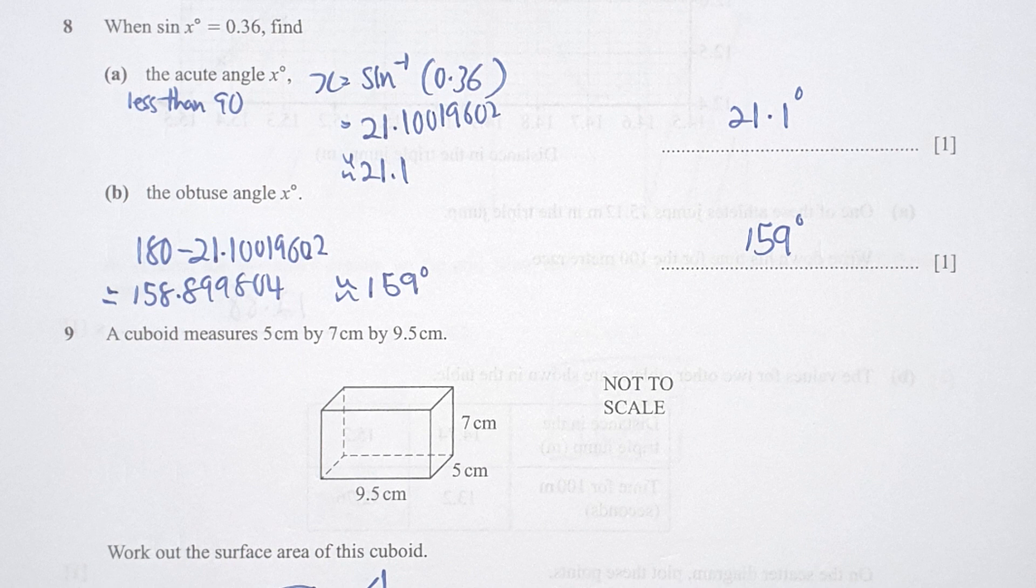For the obtuse angle, simply take 180 minus the 21.1 result that we got earlier. It should be 159 after correcting it to three significant figures.